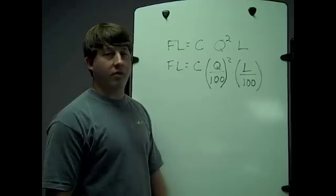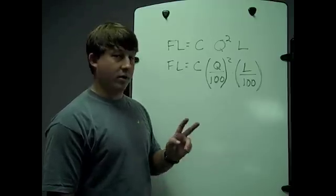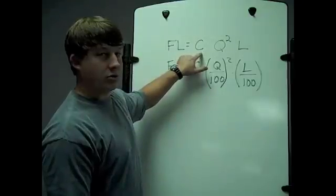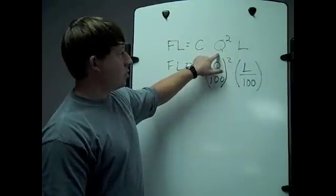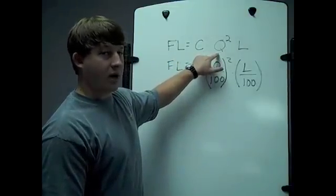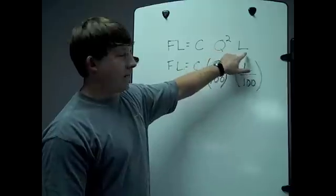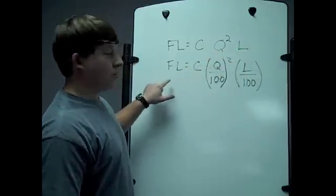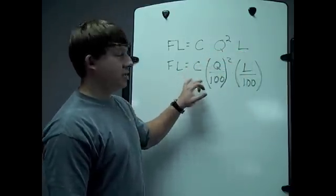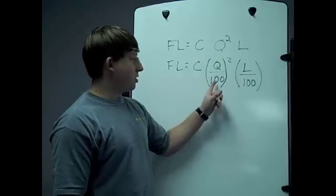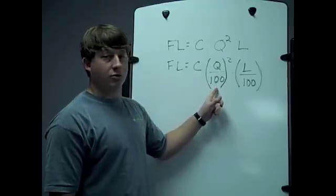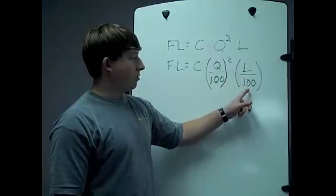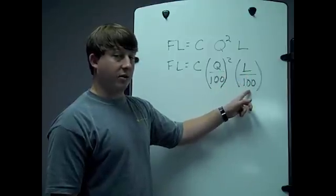I'm going to start with the friction loss formula, and I've written it in two different ways. The first is: friction loss equals C, which is your coefficient of friction, Q, which is in hundreds of gallons per minute squared, and L, which is length of hose per 100 feet. I'll rewrite it as: friction loss equals C times (Q divided by 100) squared, times (L divided by 100).